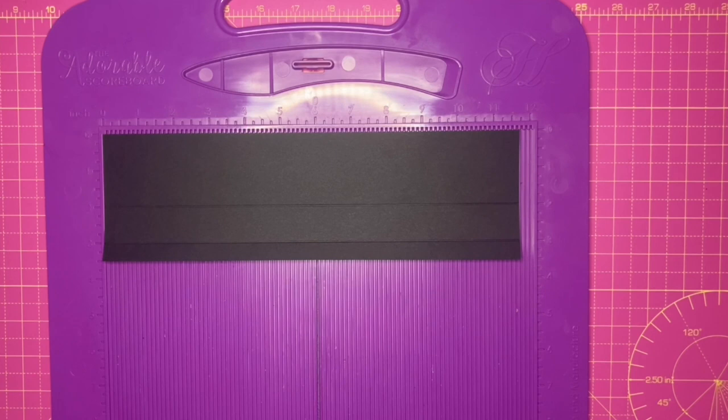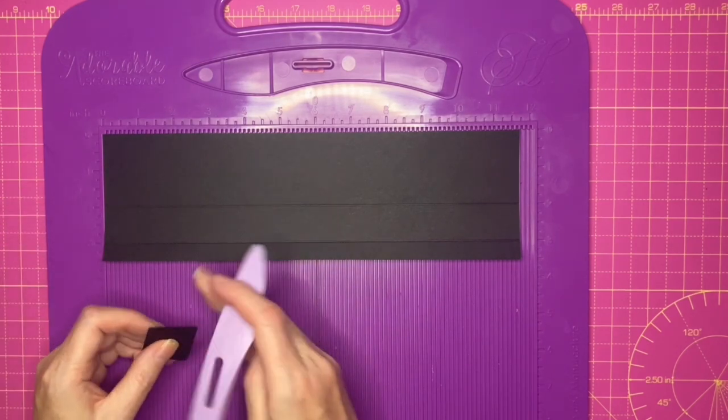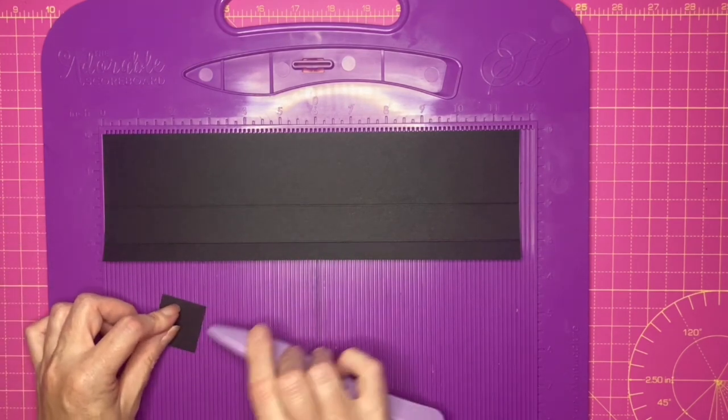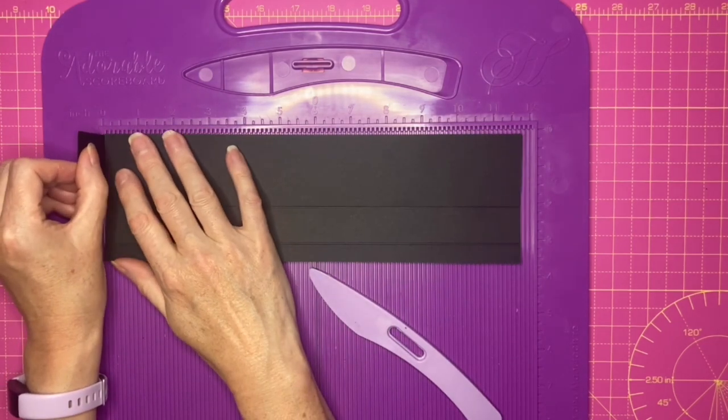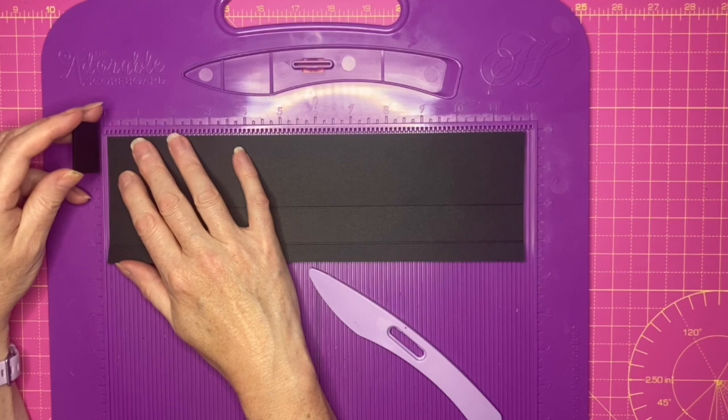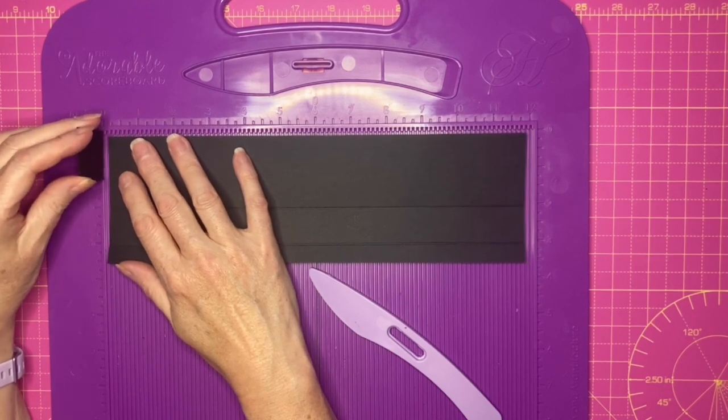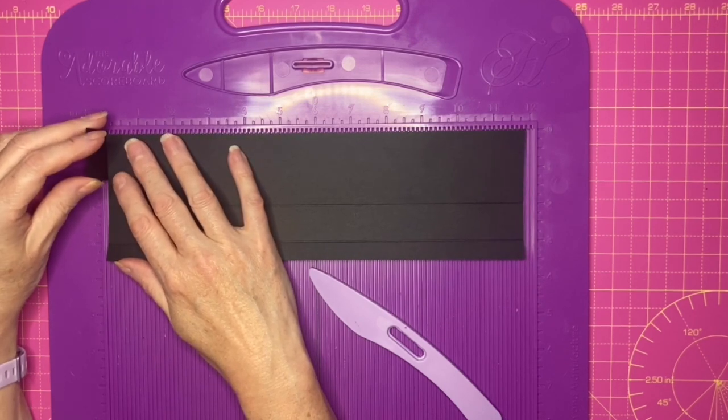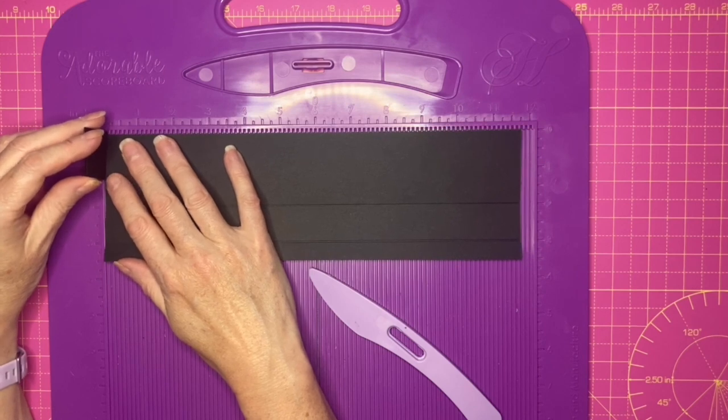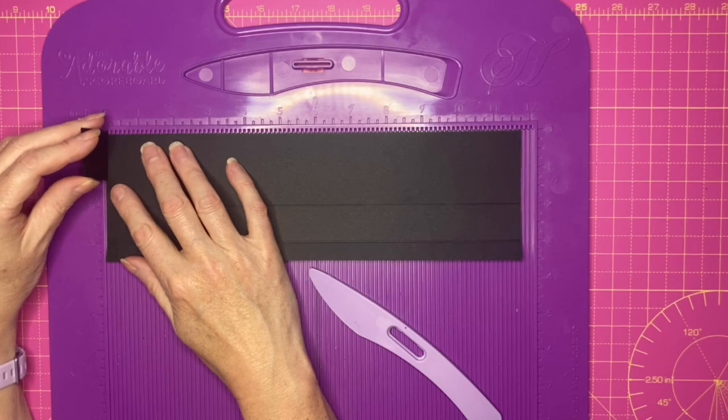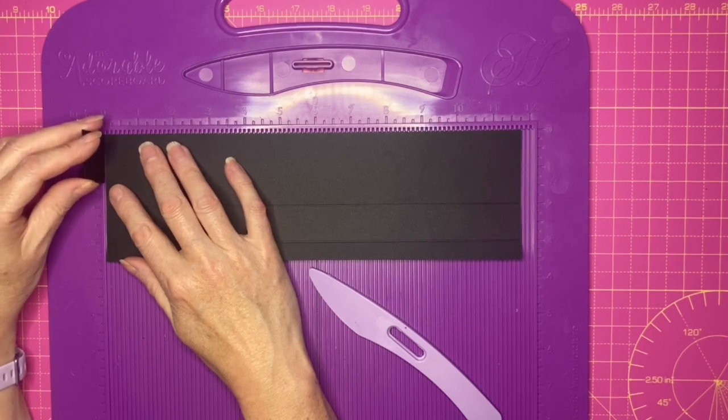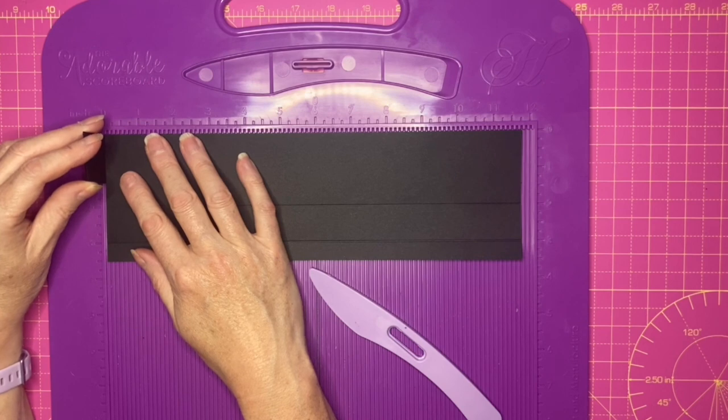In order to make sure that the lid is big enough to slot over the base of the box, I've got a piece of cardstock scrap the same as I'm using here and I'm going to put this up against the edge of the scoreboard in between the edge of the scoreboard and the piece of card, and that's just going to shift the card along slightly to help make sure that the lid is big enough to fit on the box.